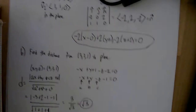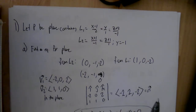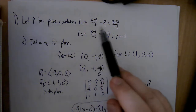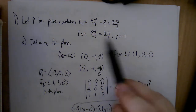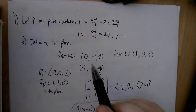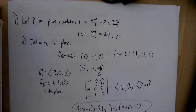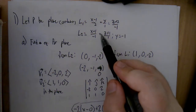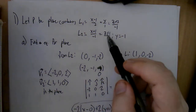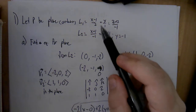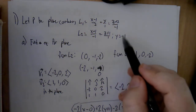Now for the two free response questions. The first: let P be a plane containing two lines given by symmetric equations. We need to find an equation for the plane. Since these lines lie in the plane, I'll use them to generate points. I'll take two points from one line and one point from the other — you can't take all points from the same line or the cross product will be zero.